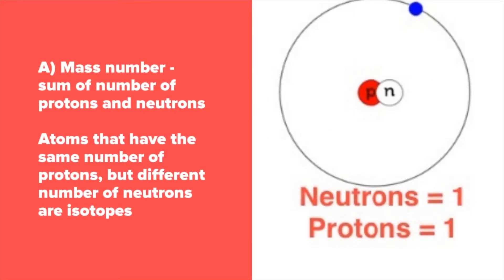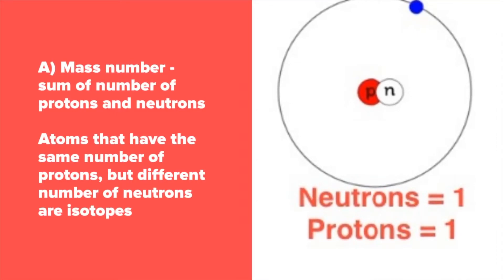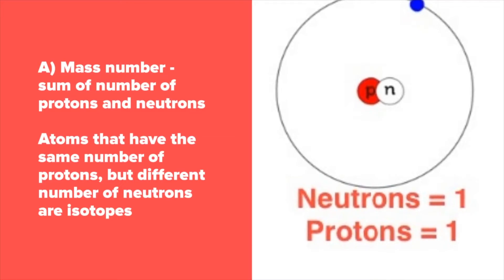Mass number is the sum of the number of protons and neutrons. Atoms that have the same number of protons but different number of neutrons are called isotopes.